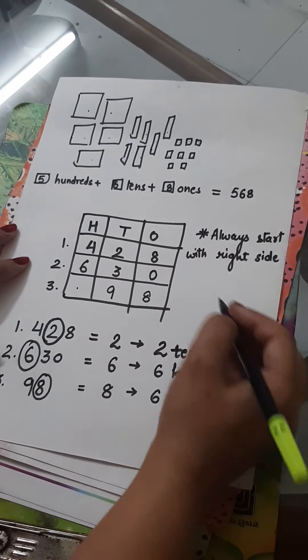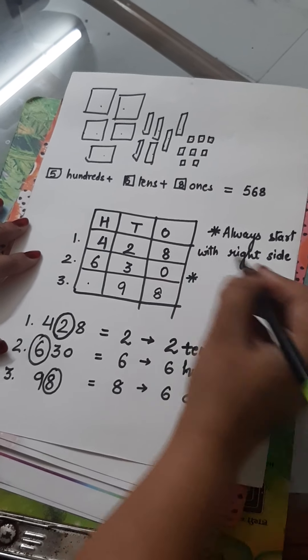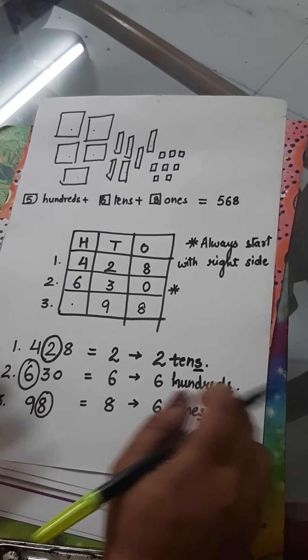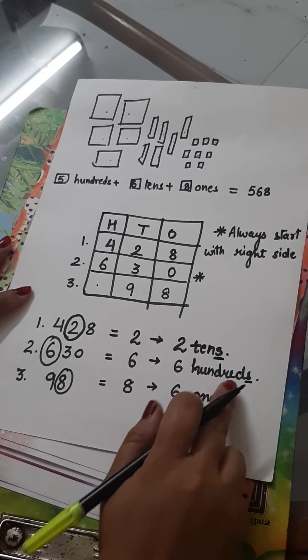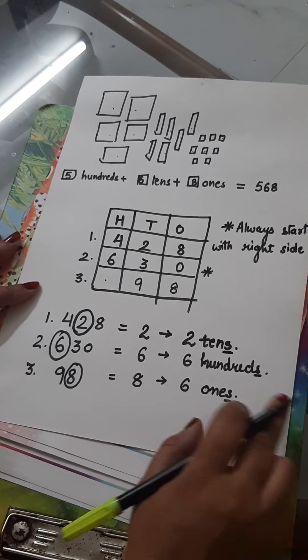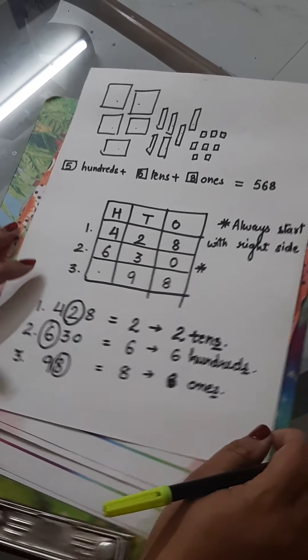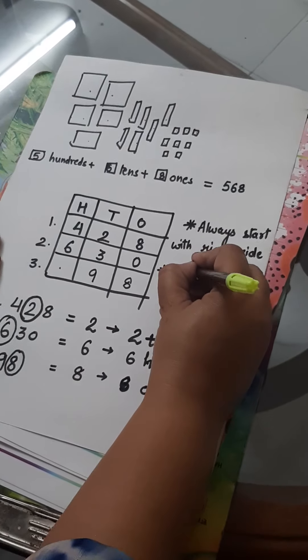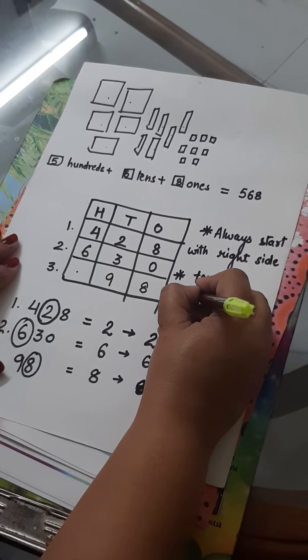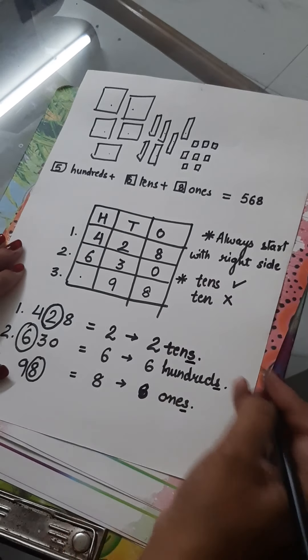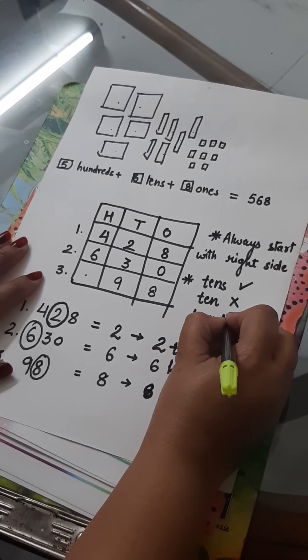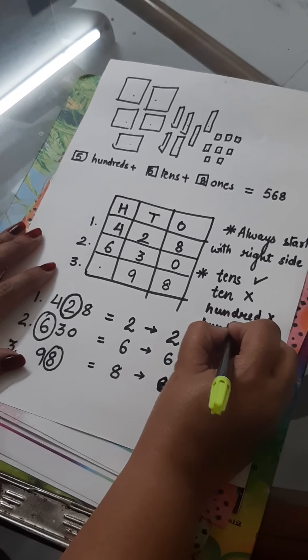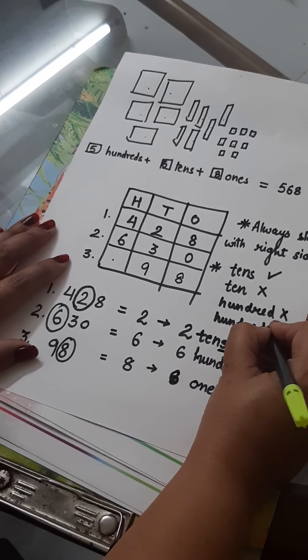Now, the second thing that I would like to tell you is, you can see I have written S, S, S everywhere. We cannot write ten, it will be wrong. If you are writing tens, it is correct. But if you will write ten, it will be wrong. If you are writing hundred, it is wrong. And if you are writing hundreds, it is always correct.